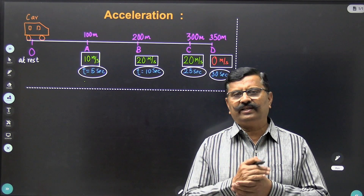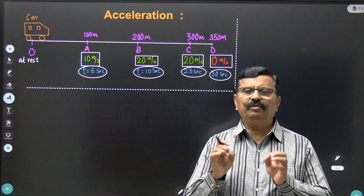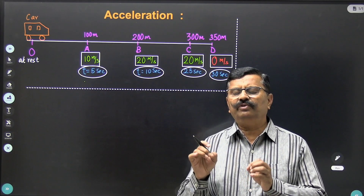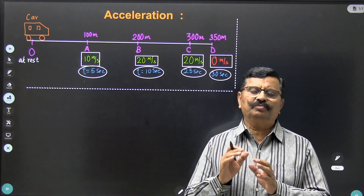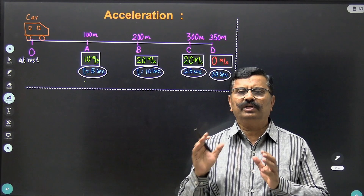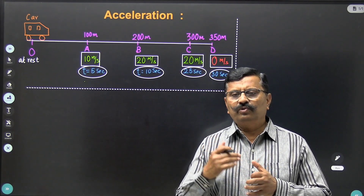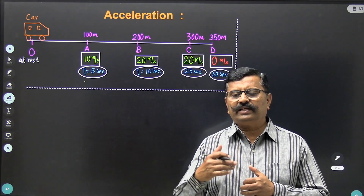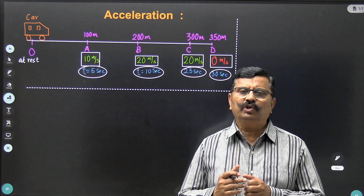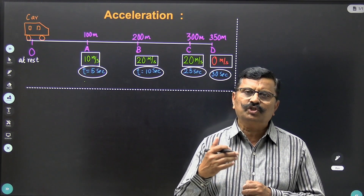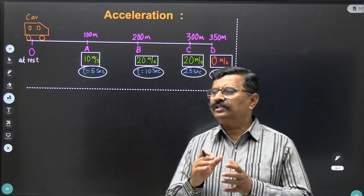Now what do you mean by acceleration? Acceleration means change in velocity with respect to time — the rate of change of velocity with respect to time. So when you say that you are accelerating your cycle, that means you are increasing the speed of your cycle with respect to time.